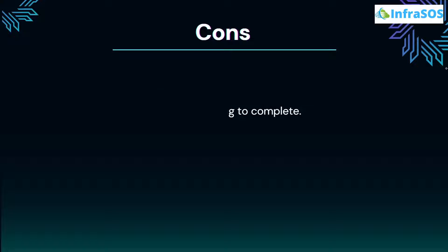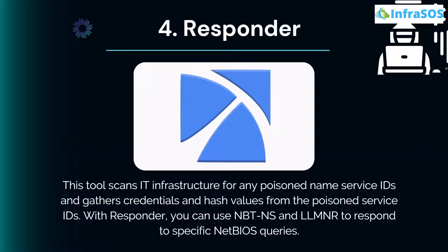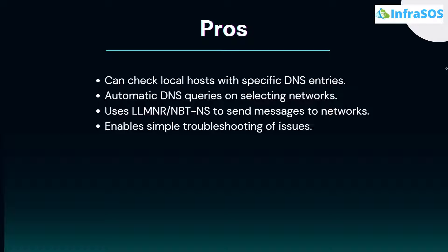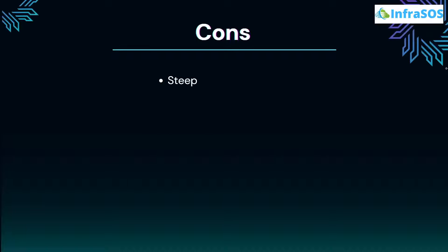Number 4 on our list is Responder. This tool scans IT infrastructure for any poison name services, IDs, and gathers credentials and hash values. With Responder, you can use NBT-NS and LLMNR to respond to specific NetBIOS queries. Pros include checking localhost with specific DNS entries, automatic DNS queries on selected networks, using LLMNR and NBT to send messages to networks, and enabling simple troubleshooting. Cons include a steep learning curve and difficulty to install and use.